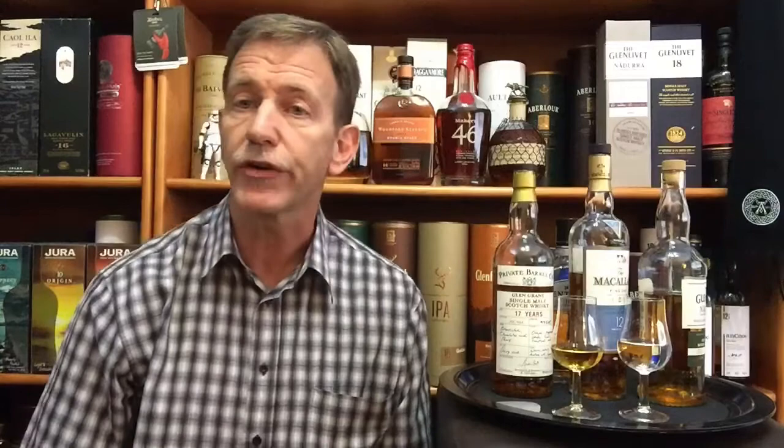Mizunara — if you hear that word, Mizunara is Japanese oak. In Japan, some whiskeys are matured in Japanese oak casks.